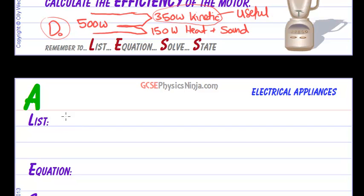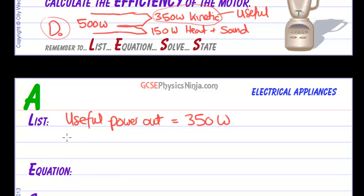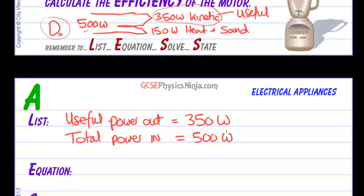Let's list our data. The useful power out, or the useful power transformed, is 350 watts. The total power in is 500 watts. And we're trying to find efficiency, so we put a question mark — and its unit is percentage. Always try to make a list of data; it will make your calculations much easier.